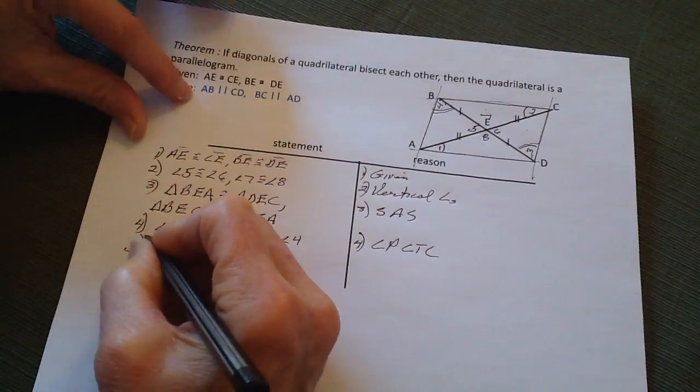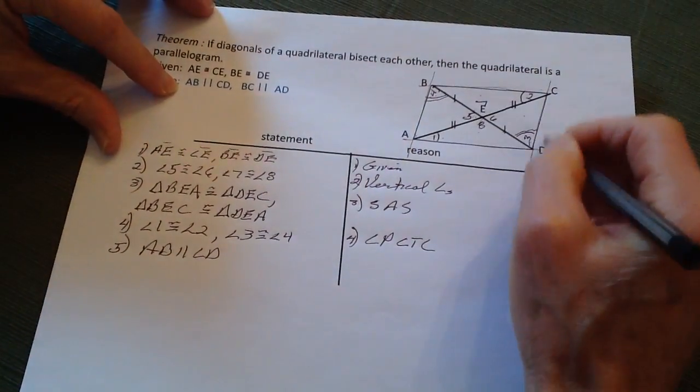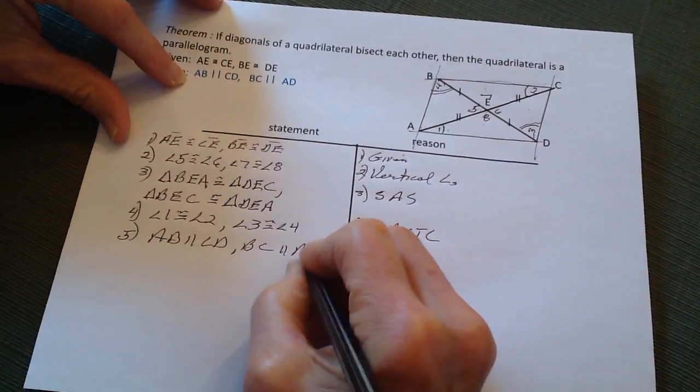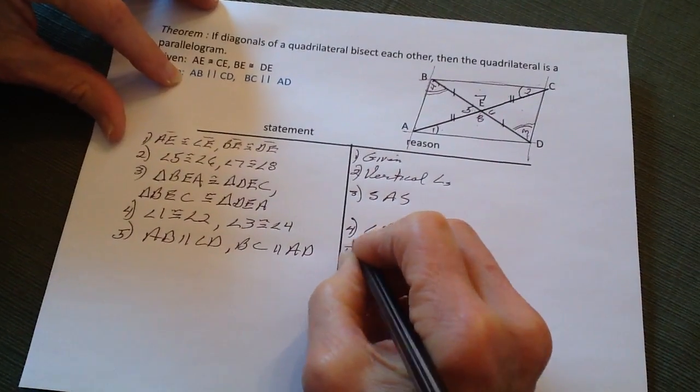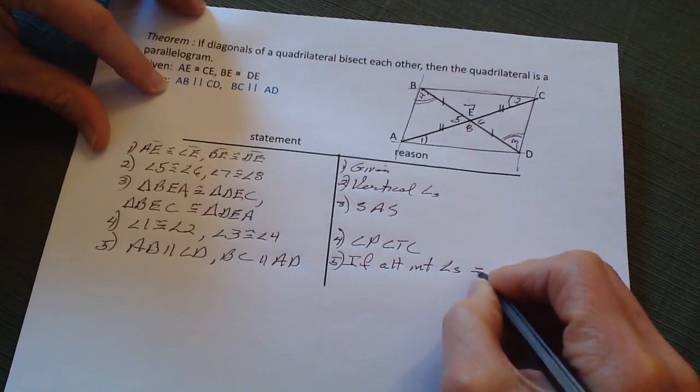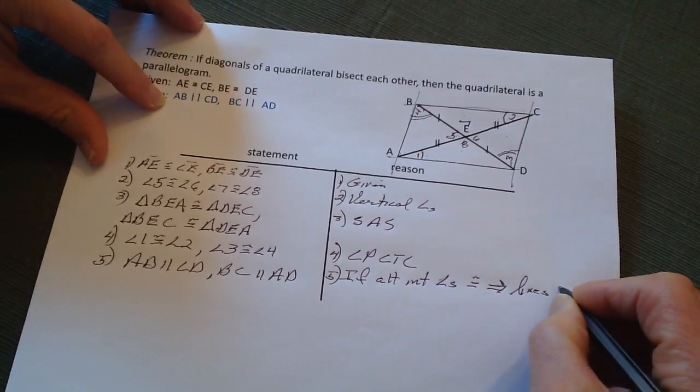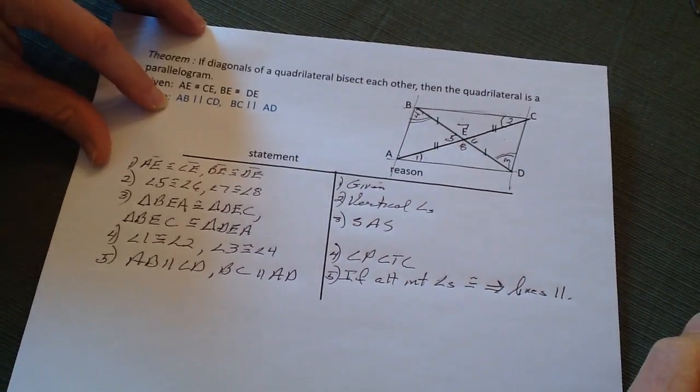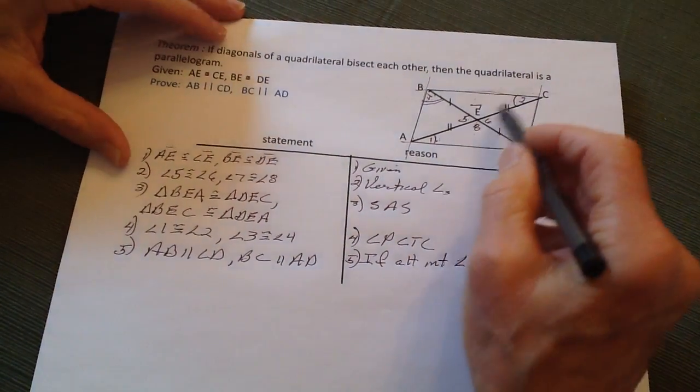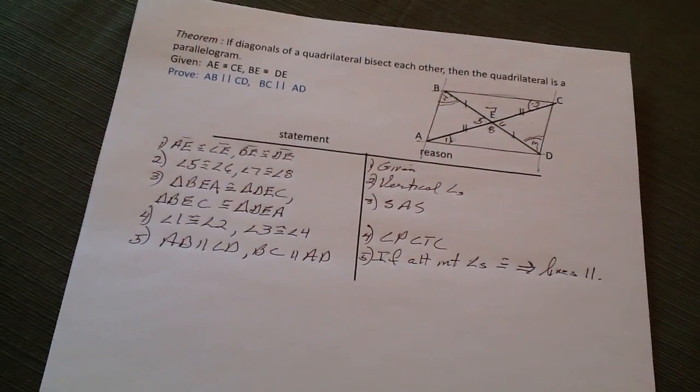Now, finally, we have AB is parallel to CD, and BC is parallel to AD. And the reason for that is 5: if alternate interior angles are congruent, then lines are parallel. So there we have it. Again, we're doing a lot of triangles together. But the strategy was to first find a way to make these alternate angles congruent to be able to prove that this really is a parallelogram.